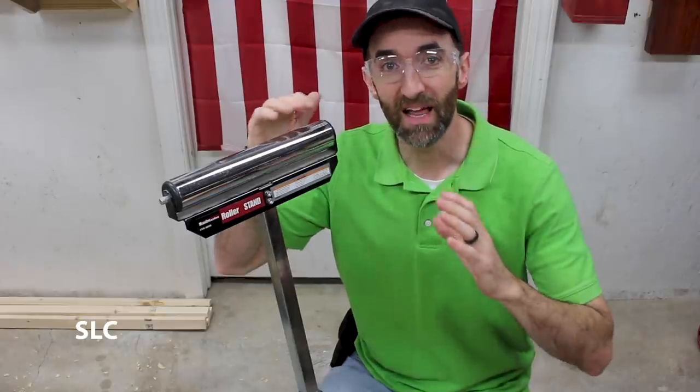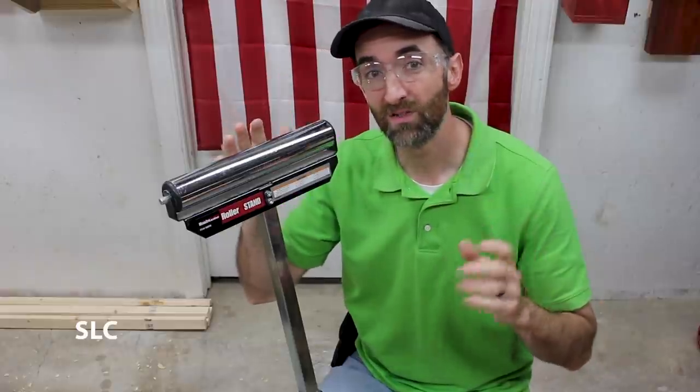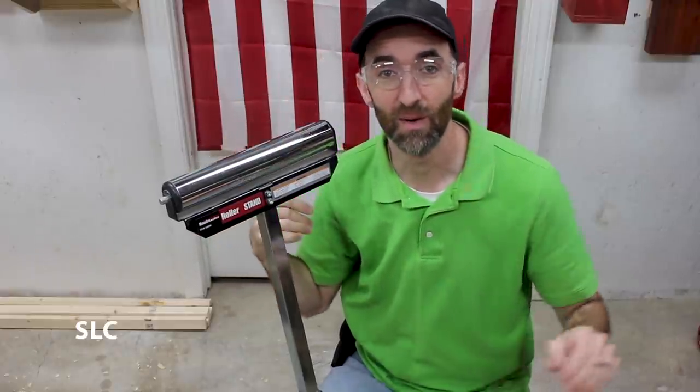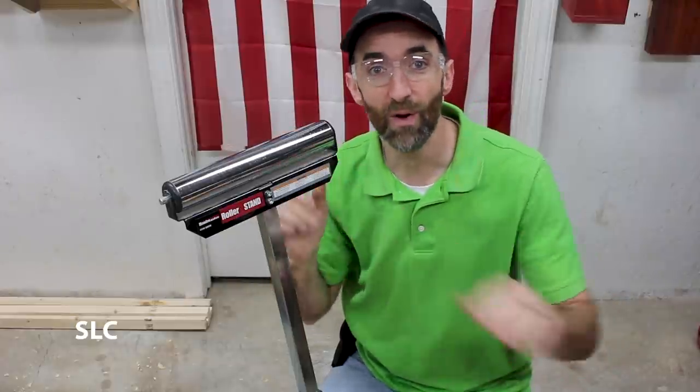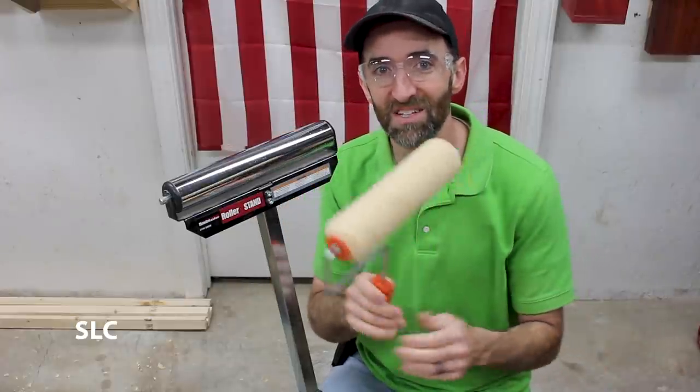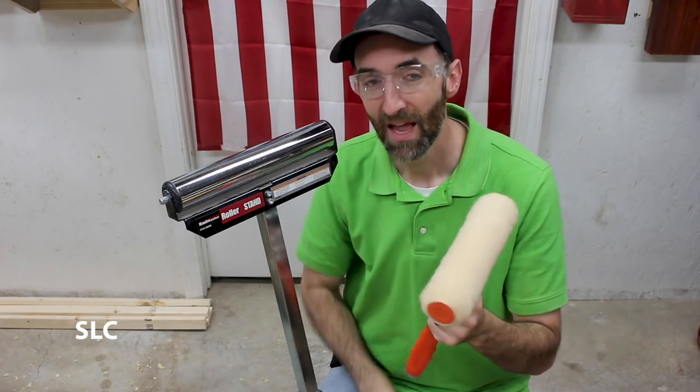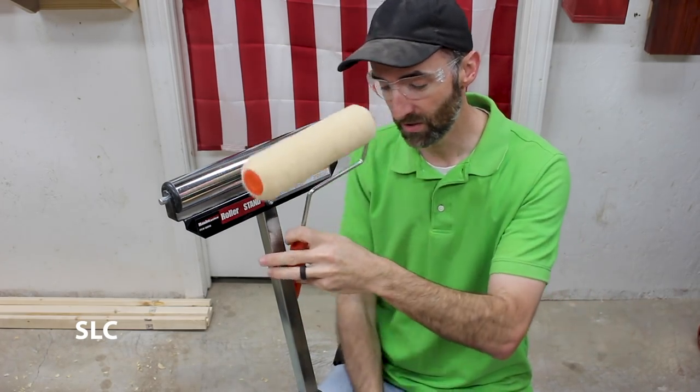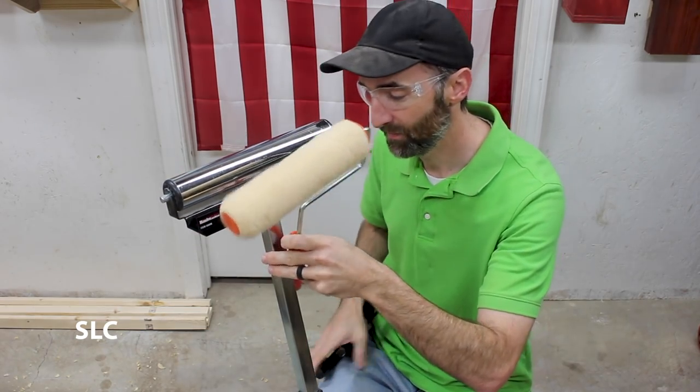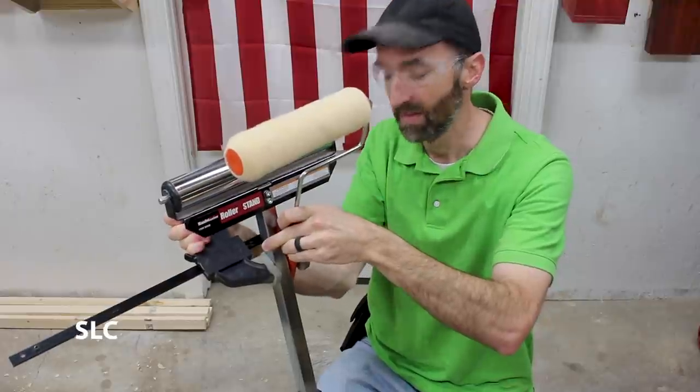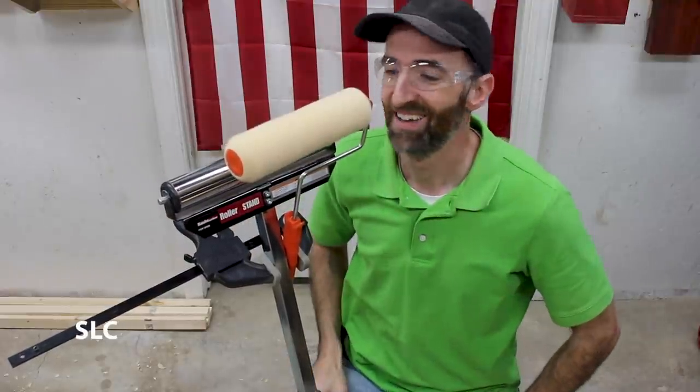Now whenever you're trying to cut a long or maybe even a wide piece of wood, sometimes having a roller stand can be very handy in those situations. But let's say you don't have one but you still need something similar. Here's a very simple way to make one. This is just a basic paint roller and you want to attach it to something real sturdy. Get yourself a clamp. Clamp it right in place. And there you go. A little roller stand.